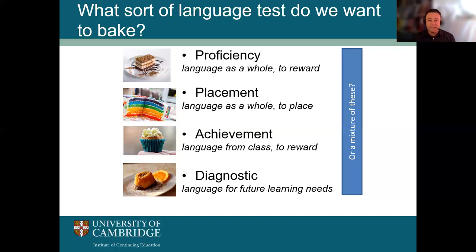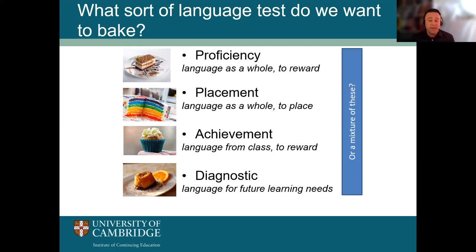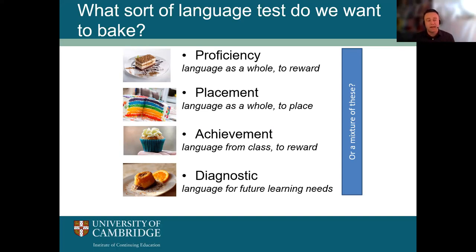Another sort of language test is a placement test, which teachers in classrooms will often do at the beginning of a course — testing a representative sample of language as a whole in order to place students at different levels appropriate to their learning needs. Thirdly, we have an achievement test, often used in classroom assessments to check that candidates have learnt and assimilated the language used in class, and to give them a certificate saying they've passed. Unlike the proficiency test, the language being tested is specifically designed around the curriculum the class has been following.